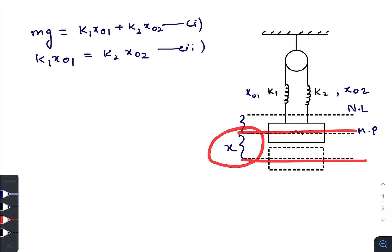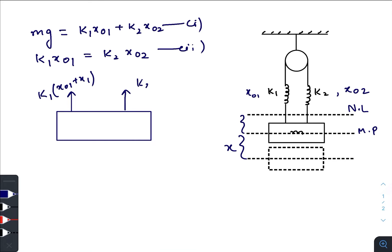It reaches down by an amount of x from the mean position. At that instant of time, if you draw the free body diagram of the block separately, we will get to know that the forces acting on the block are k₁(x₀₁ + x₁) and k₂(x₀₂ + x₂), where x₁ and x₂ represent the further stretching of the two springs.